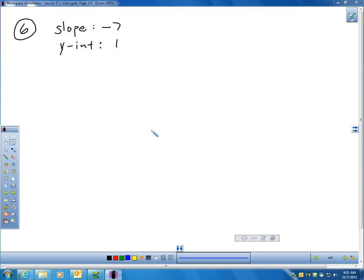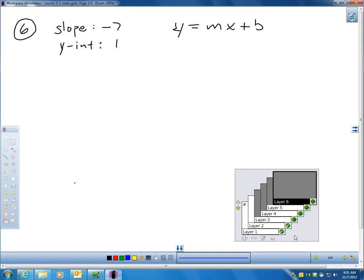And the directions are for this question, write an equation of the line with the given slope and Y-intercept. So, first of all, I want to write an equation for a graph that has a slope of negative 1 and a Y-intercept of 1.